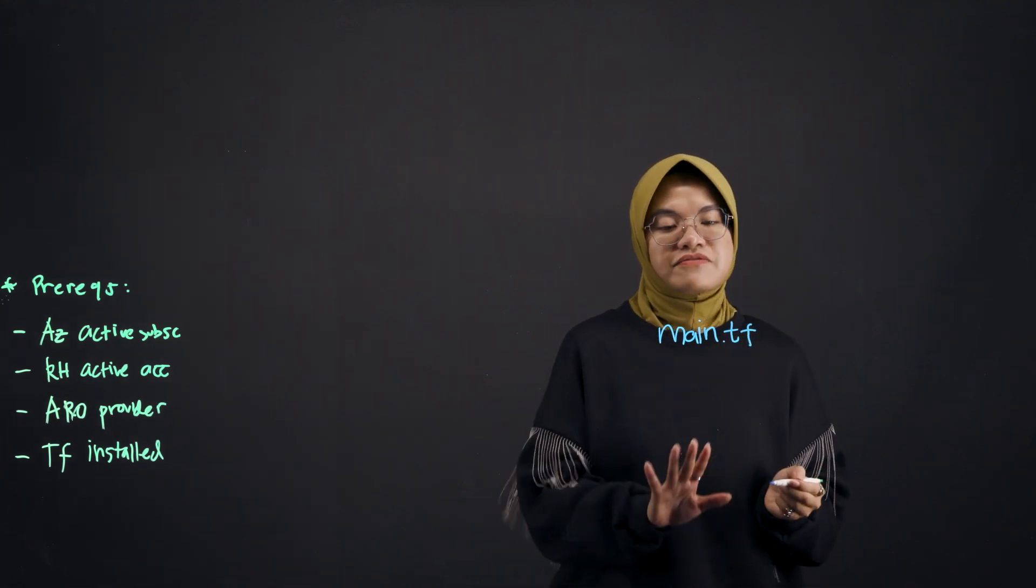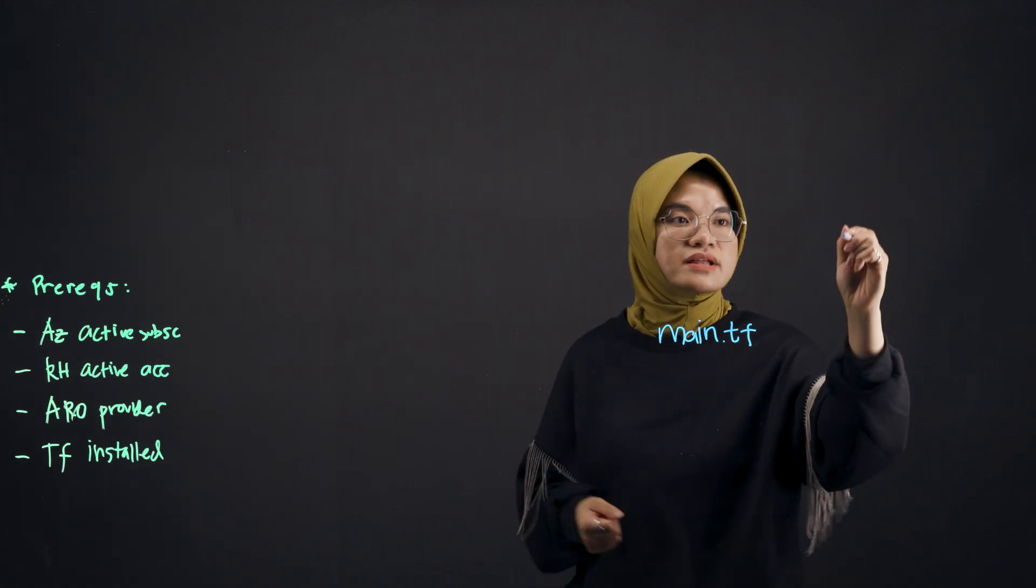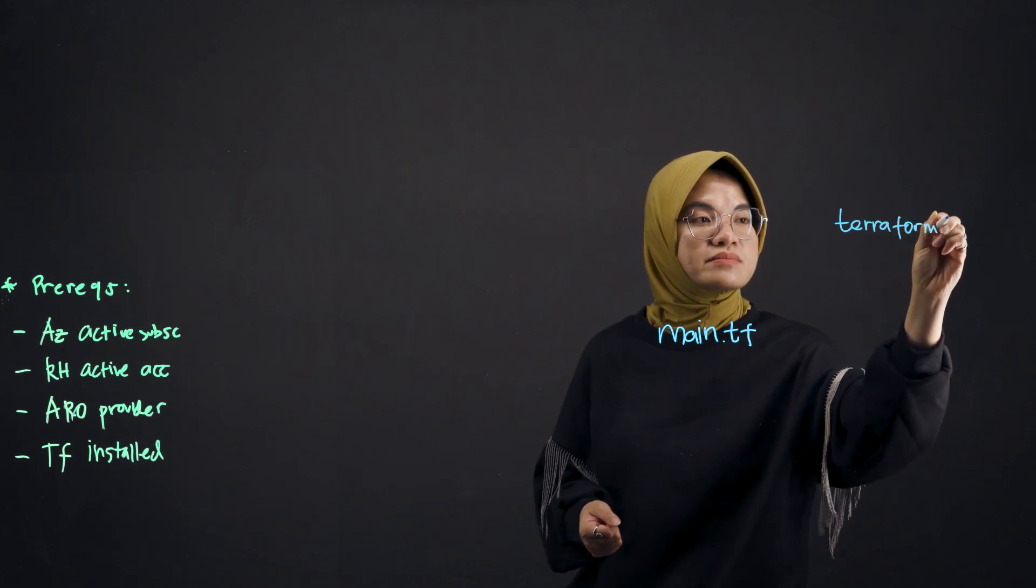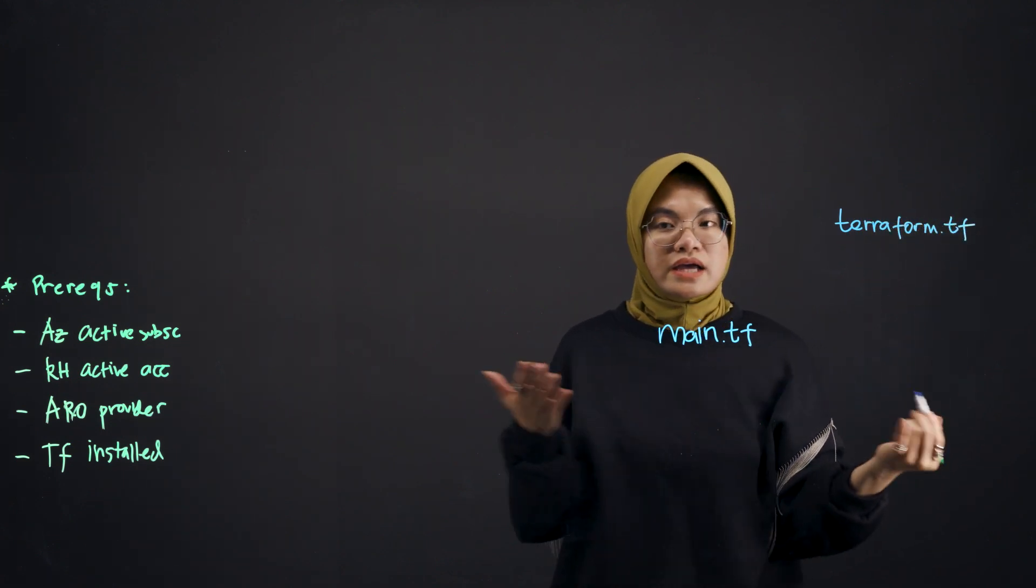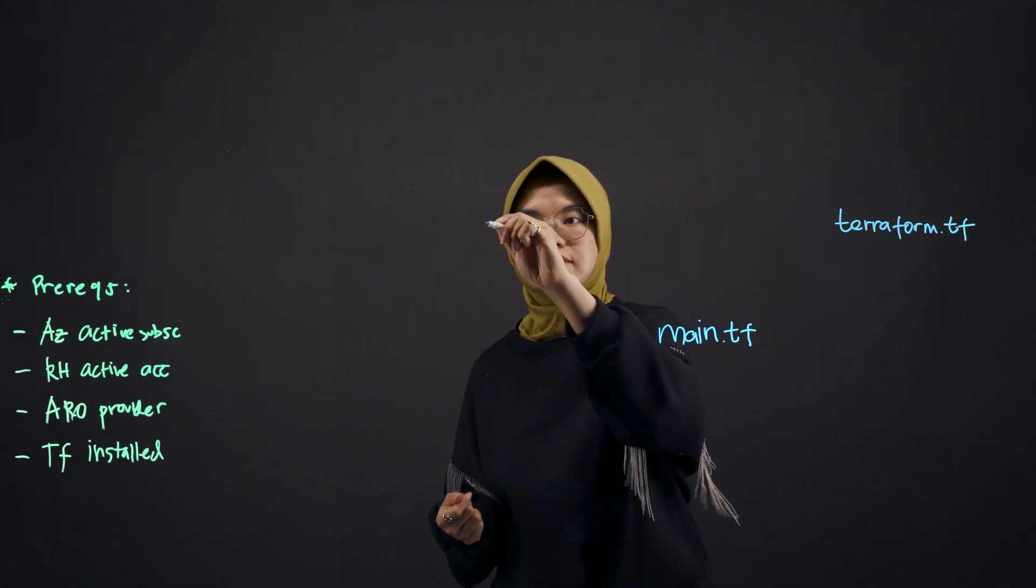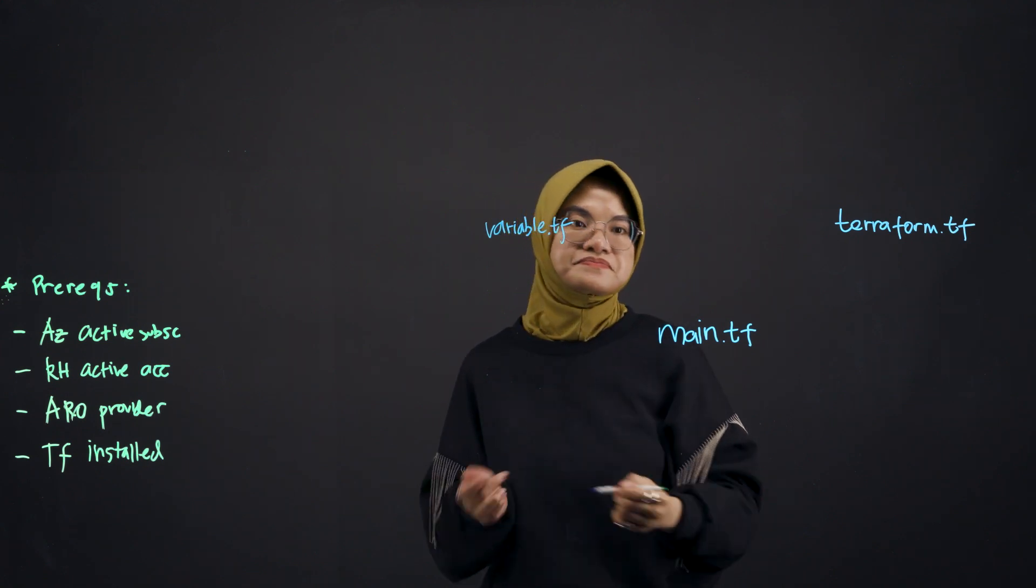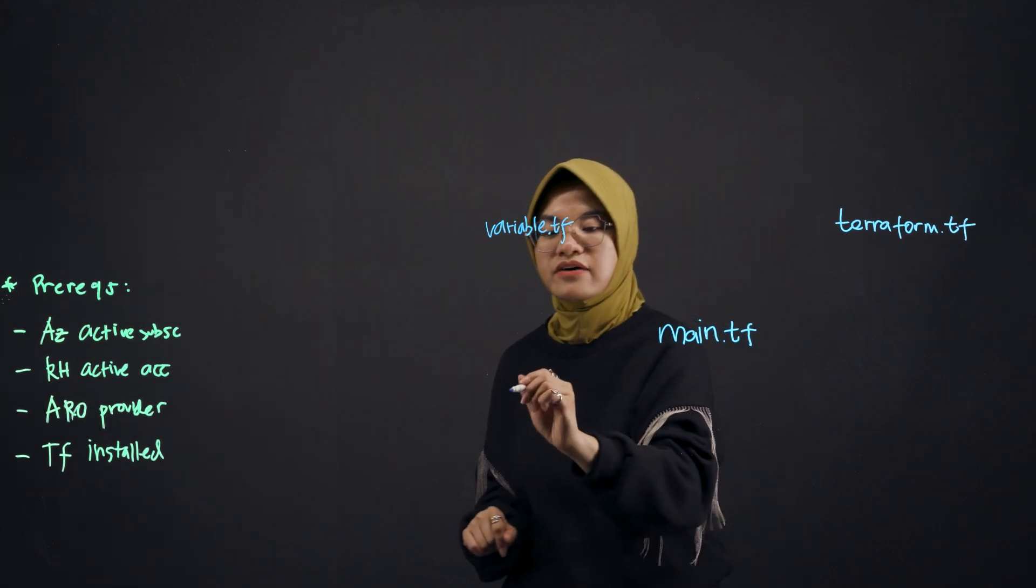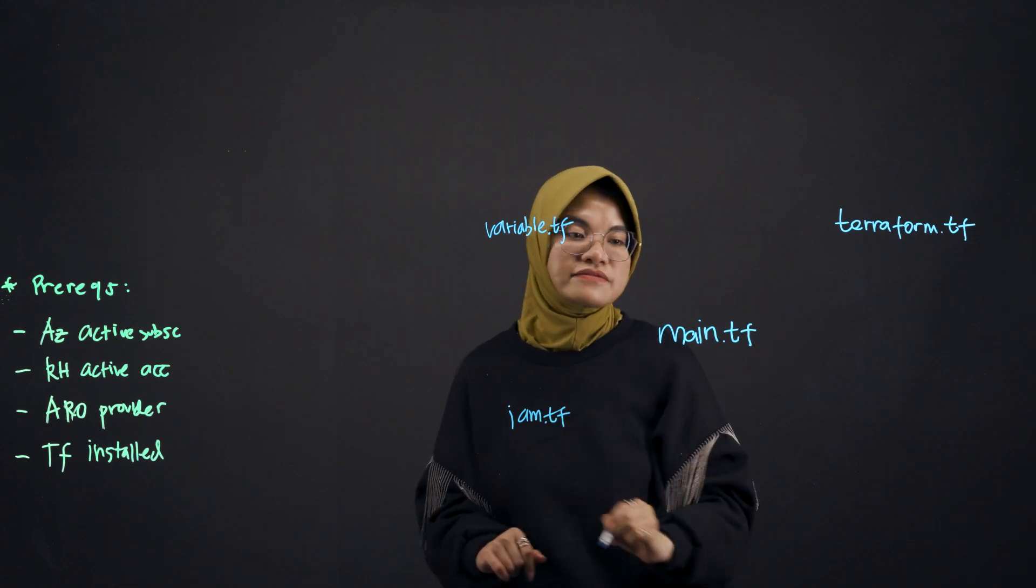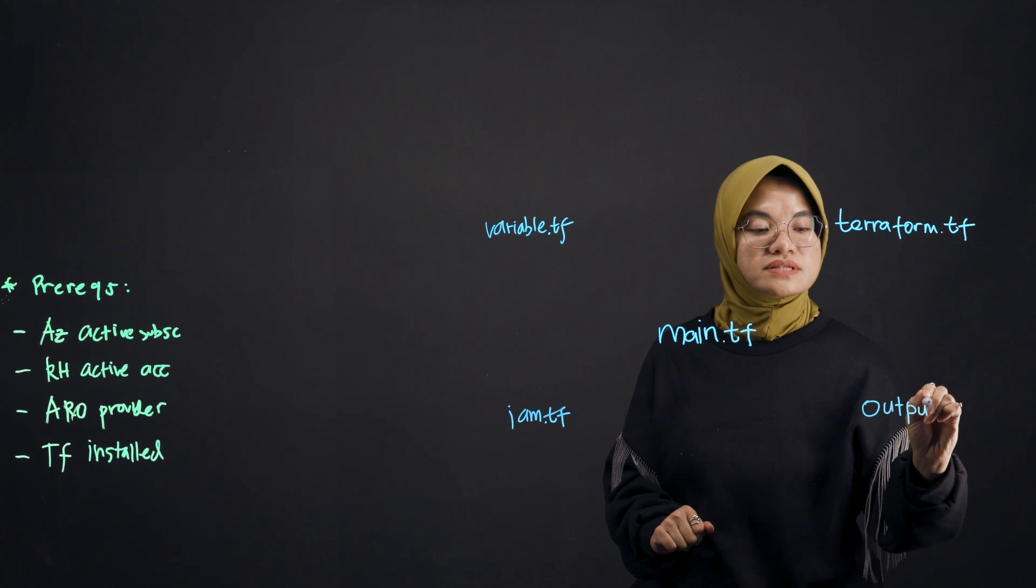And then this file will have dependencies. We'll start with, let's call it Terraform.tf. And then it will have a variable file, let's call it variable.tf. And it will also have what we call iam.tf. And then another one here, we will have output.tf.